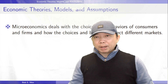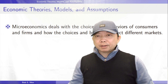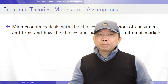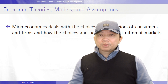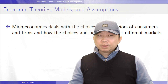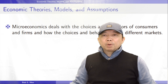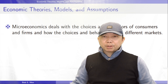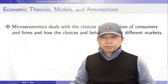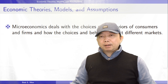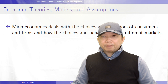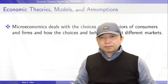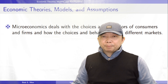Individual consumers and firms face scarce resources and have to make trade-offs. Consumers make consumption choices subject to budget constraints. Firms decide how to produce using limited resources such as labor, capital, and land. People and firms' decisions and behaviors would impact market prices.